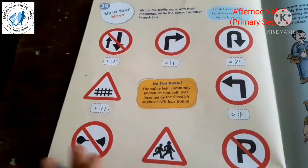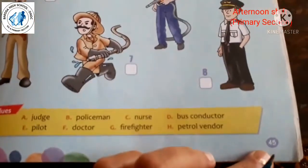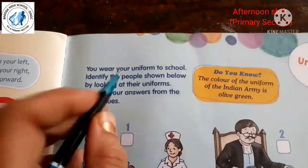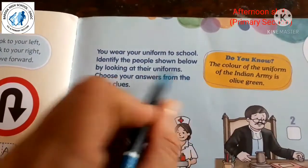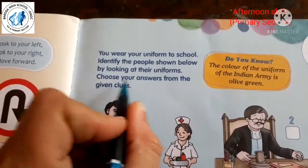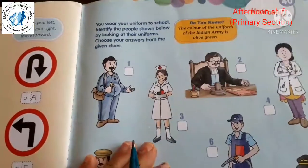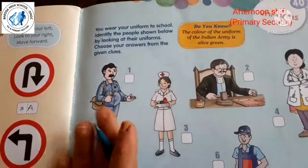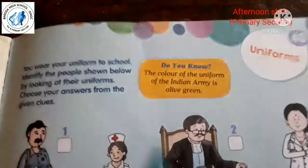Now the next lesson — lesson number 40 on page number 45, about uniforms. You wear your uniform to school. Identify the people shown below by looking at their uniforms, and choose your answers from the given clues. You have been given some people with their uniforms and you have to identify them.